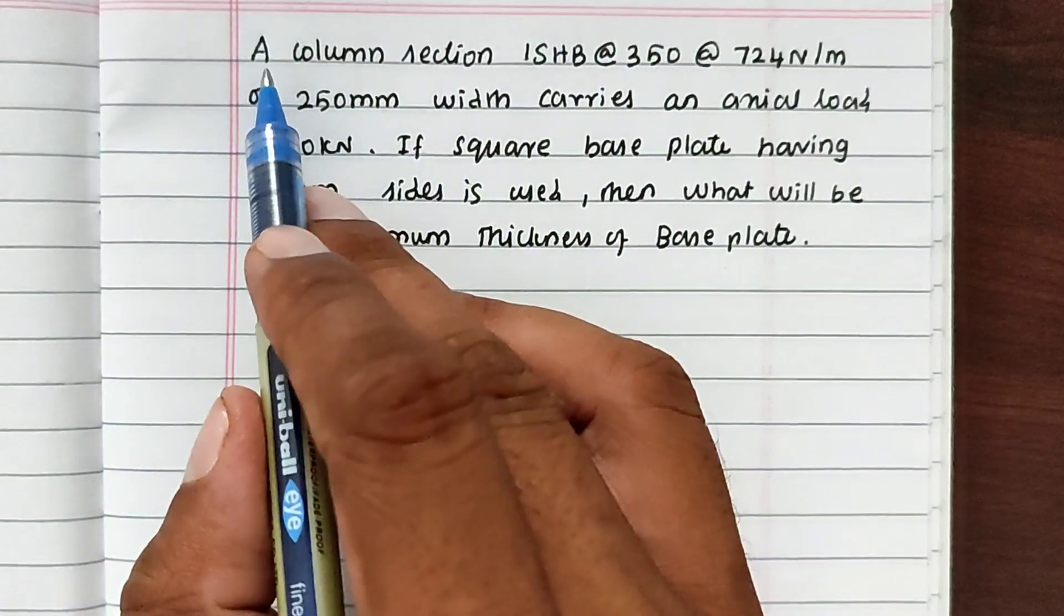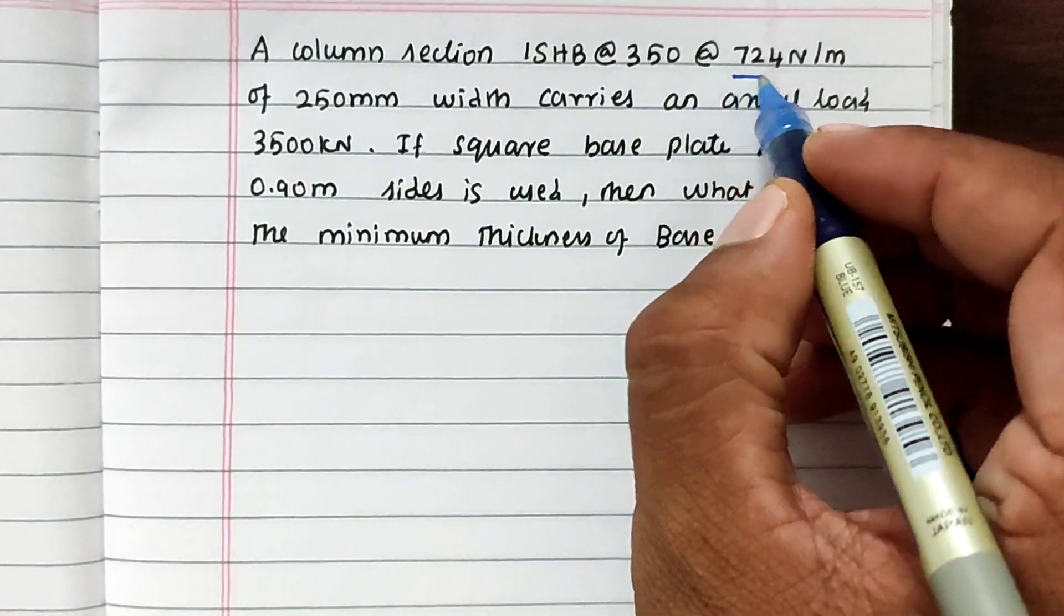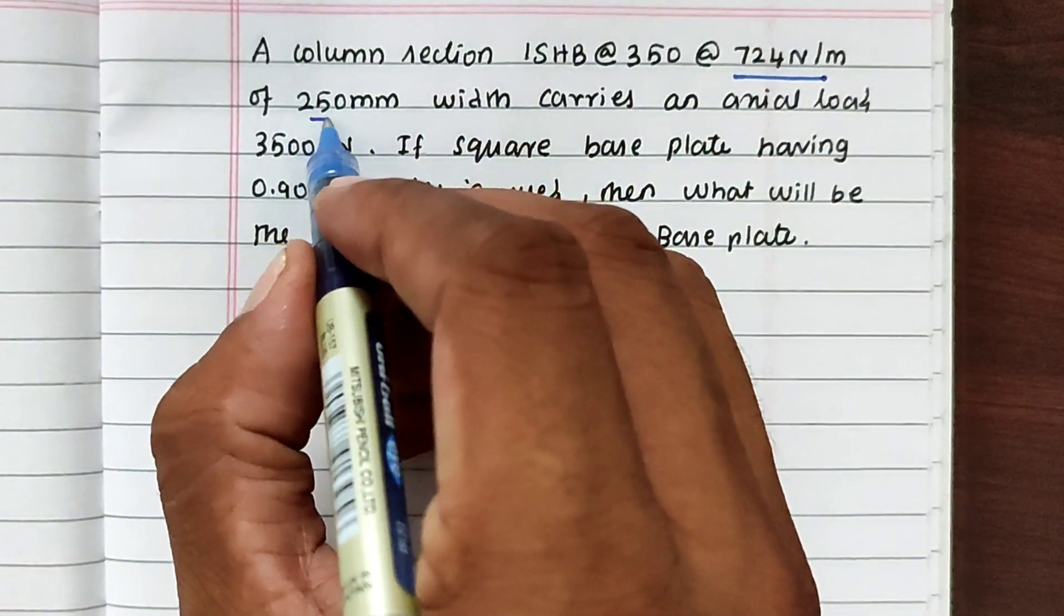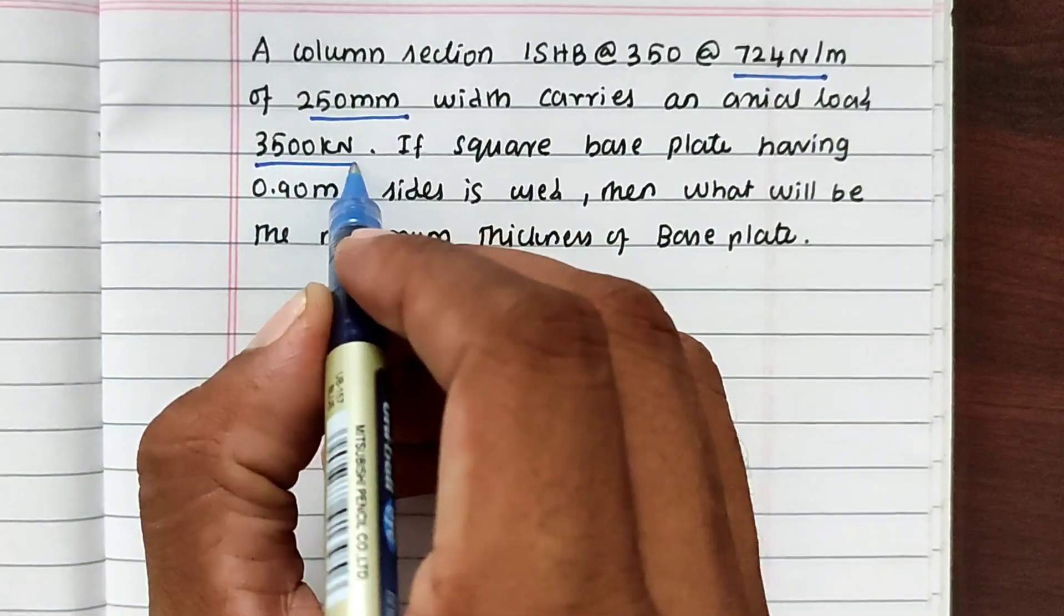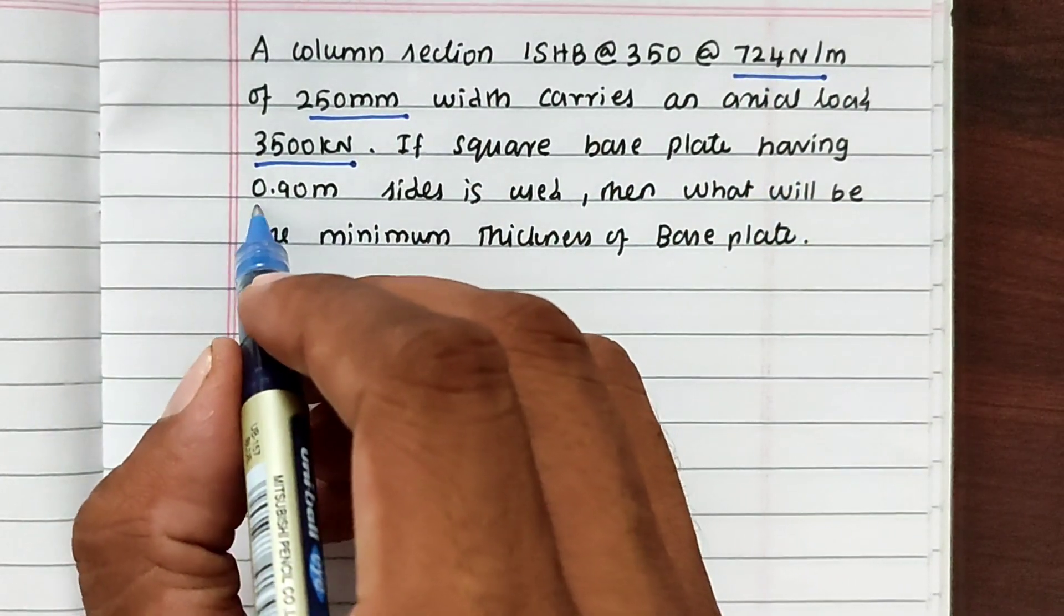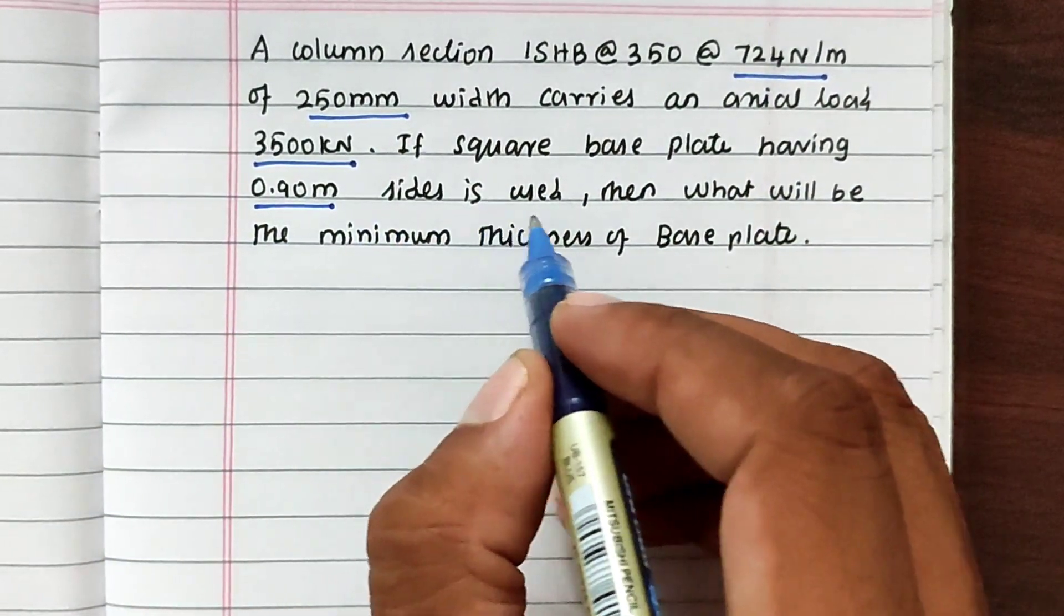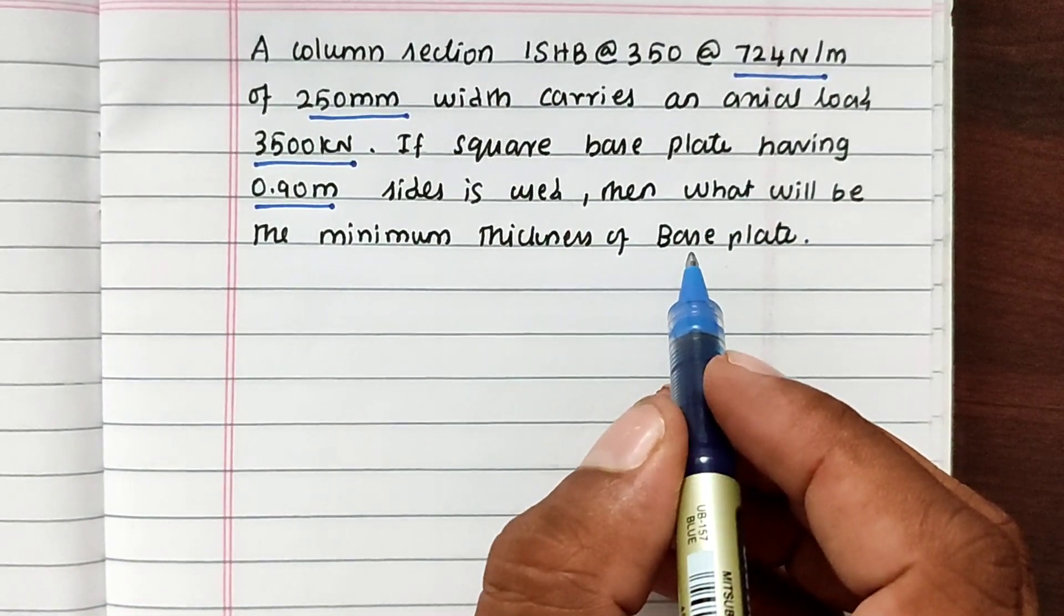The problem is: a column section ISHB 350 at 724 N per meter of 250 mm width carries an axial load of 3500 kN. If a square base plate having 0.90 meter thickness is used, then what will be the minimum thickness of the base plate?